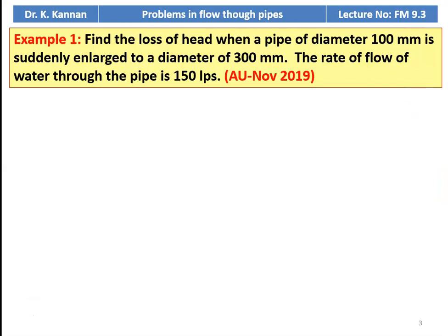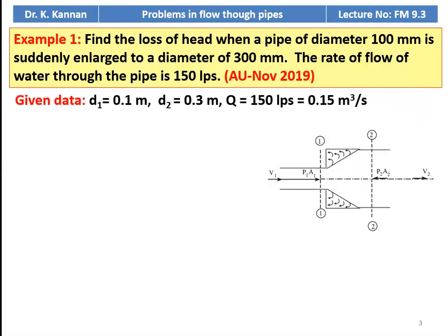Example number 1 from the November 2019 question paper: find the loss of head when a pipe of diameter 100 mm is suddenly enlarged to a diameter of 300 mm. The rate of flow of water through the pipe is 150 liters per second. The diameter of the smaller pipe at entry is 0.1 meter, diameter after enlargement is 0.3 meter, and the discharge is 150 LPS, that is 0.15 cubic meters per second.